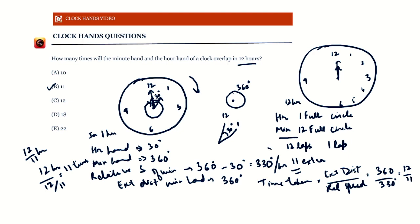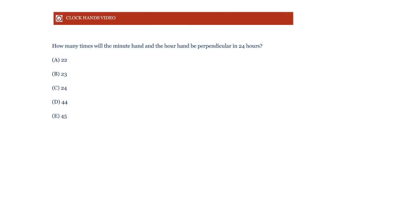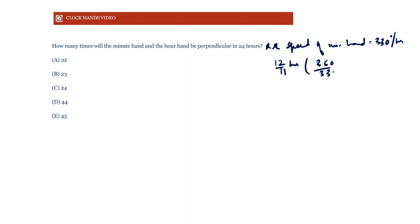The key thing to remember is that the relative speed of the minute hand with respect to the hour hand is 330 degrees per hour. The two hands overlap once every 12/11 hours, since the distance the minute hand must cover extra is 360 degrees and the relative speed is 330 degrees per hour, giving a time of 12/11 hours.